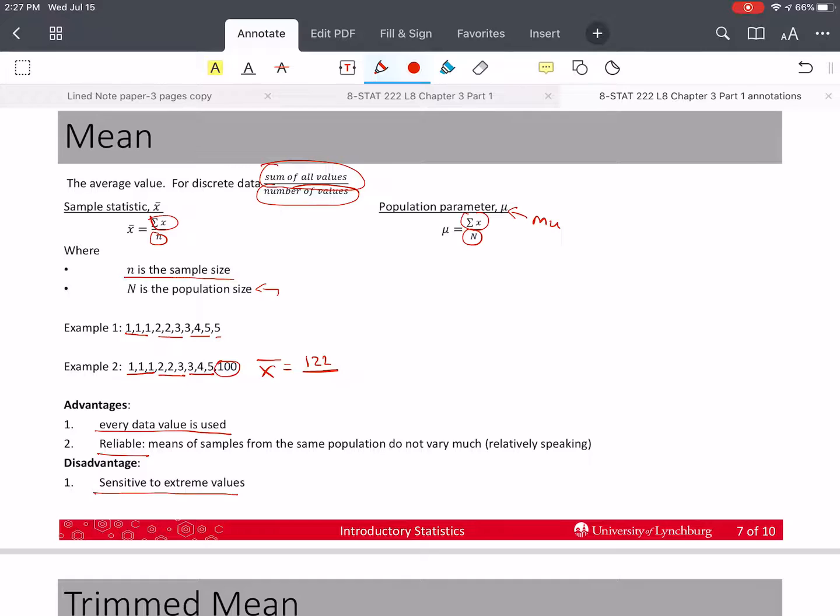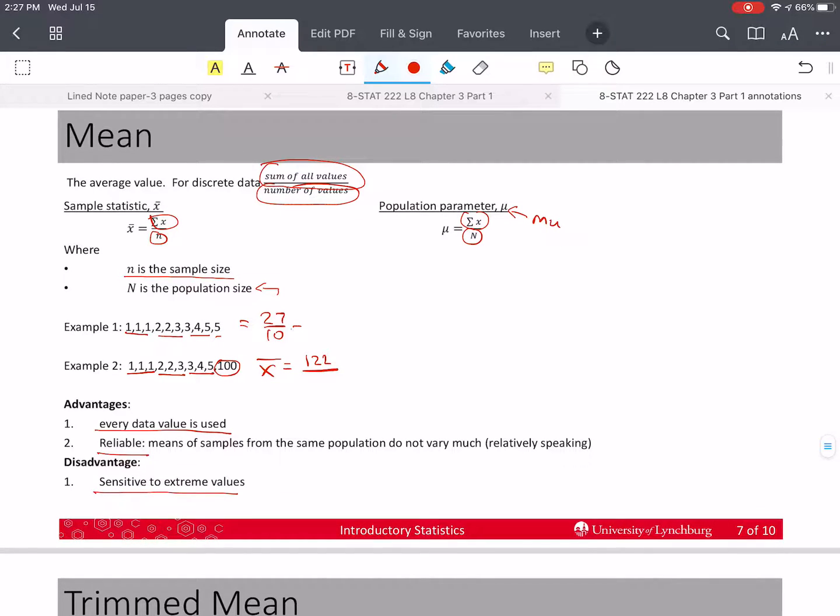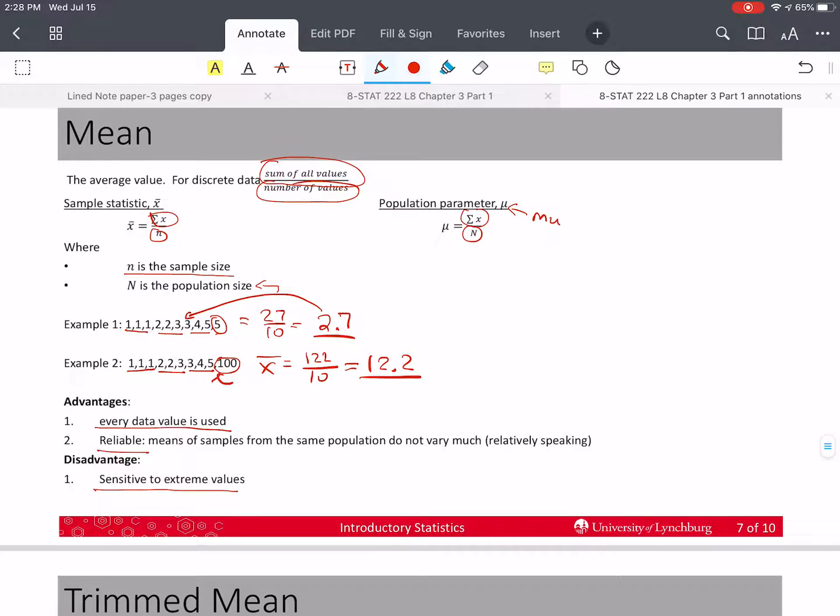Now I have 122 divided by 10, and that's 12.2. So I changed one number from 5 to 100. An extreme value changed the mean all the way from 2.7 to 12.2. And notice that none of the data is anywhere near 12, whereas here, there's quite a bit of data around 2.7 near that value. But none of the values are near 12.2. It's way between 5 and 100. So the mean is a very common measure, but if you have skewed data, or data with extreme values, it might not be your best measure of the center.